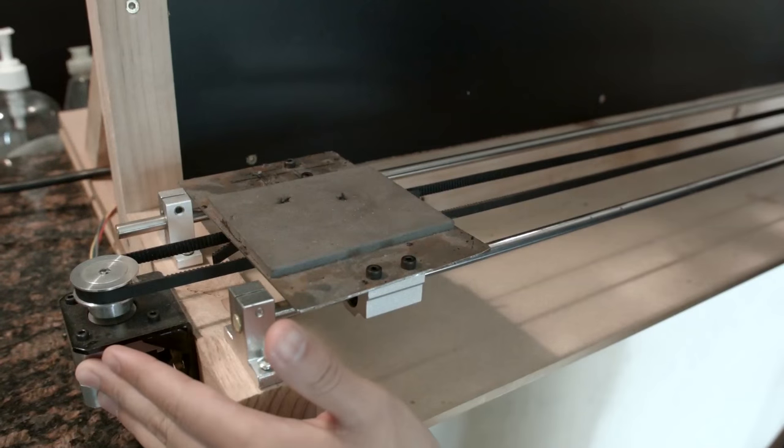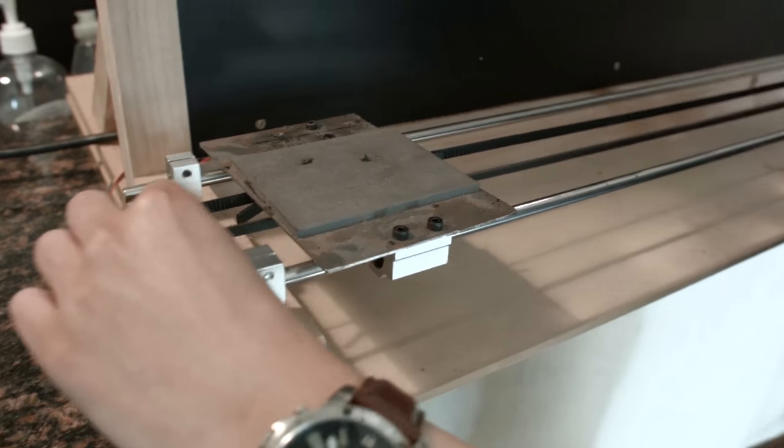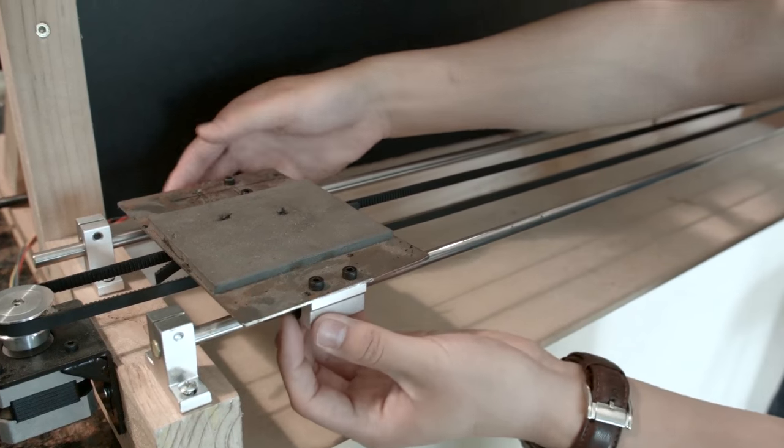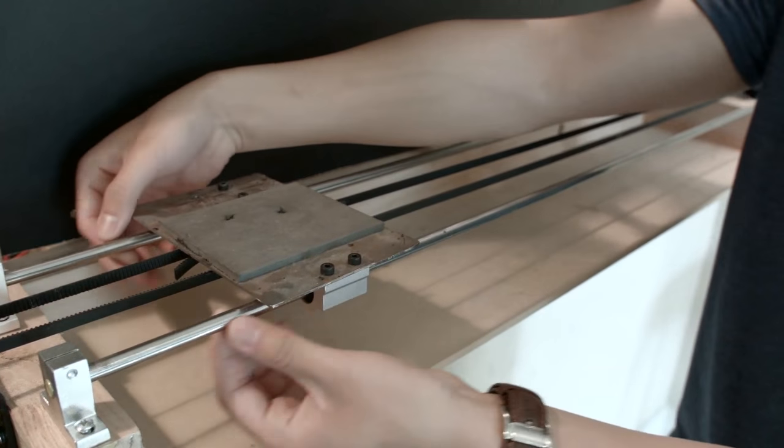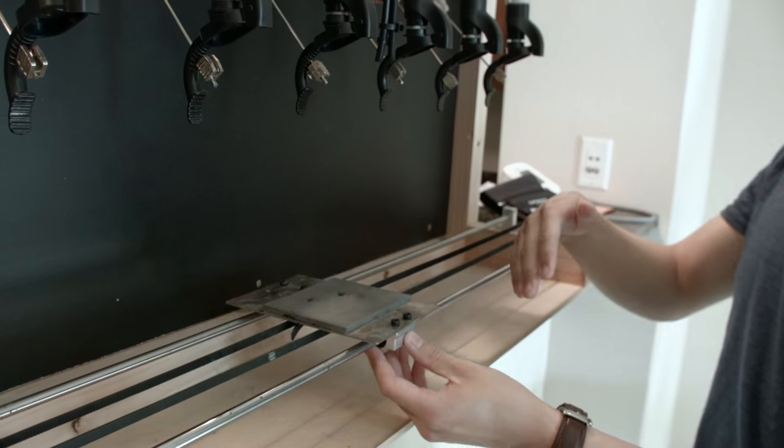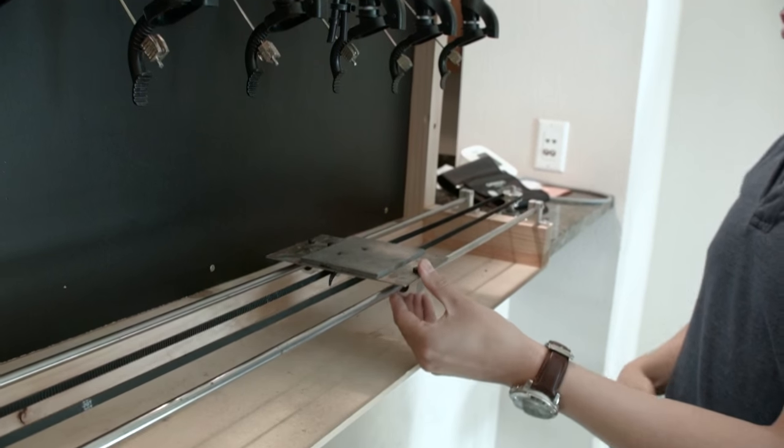So we have a stepper motor here, and this is what drives our conveyor on a timing belt. This is the platform where the glass goes on, and it slides on linear bearings on these two metal rails. So it slides across and stops at each drink, and then each drink dispenses and then it moves on.